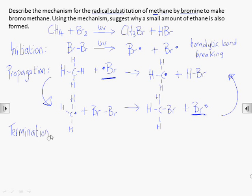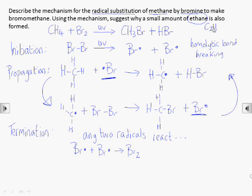Eventually, two radicals will collide with each other in a termination step. Any two radicals can collide and form a molecule, so one of the possible combinations would be two bromine radicals combining to form a bromine molecule, while another combination would be two methyl radicals combining to form ethane.